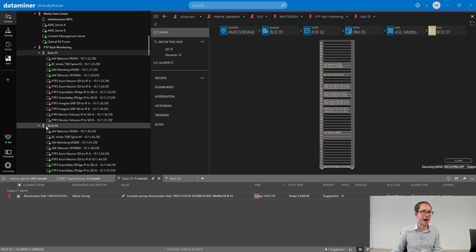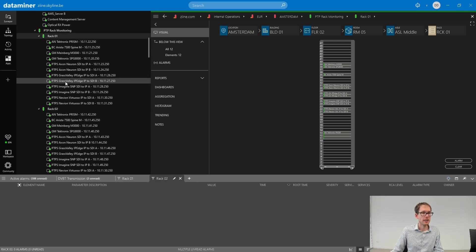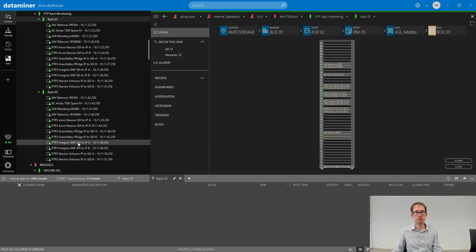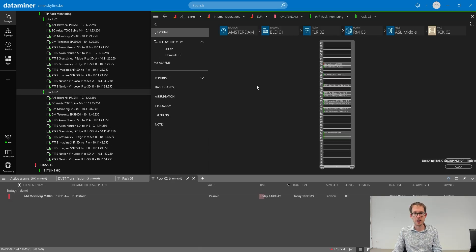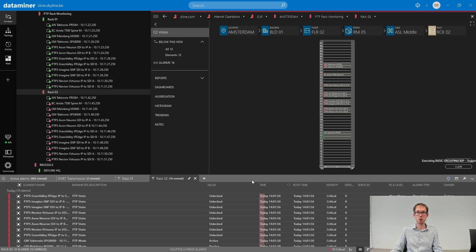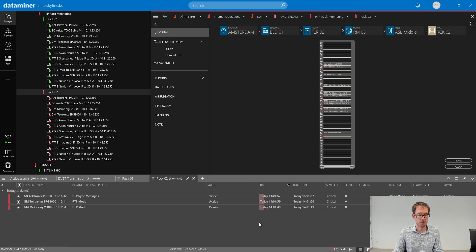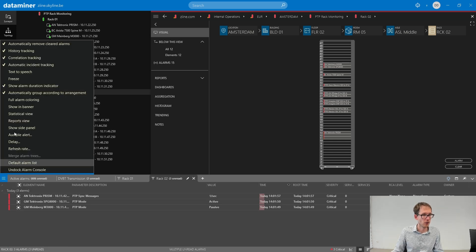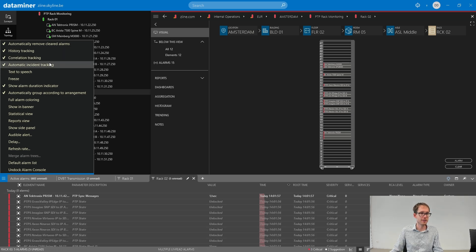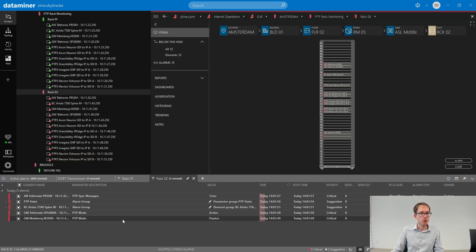Next, we're going to go to rack two. This is the exact same setup except that we do not have location information specified. Again, I'm going to create the alarms. This time DataMiner should not be able to group them based on location. Let's check it out. Incident tracking is already enabled. Let me toggle so you can see it.